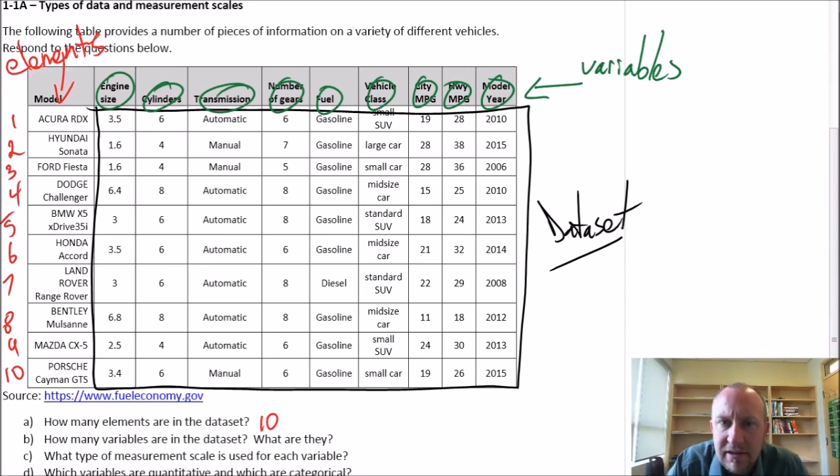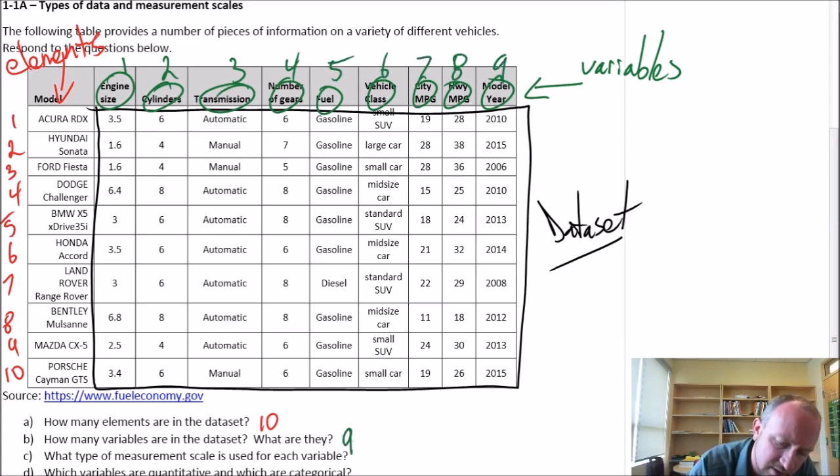Part B here is asking how many variables are in the data set. So if we just count these up I have one, two, three, four, five, six, seven, eight, and nine variables.